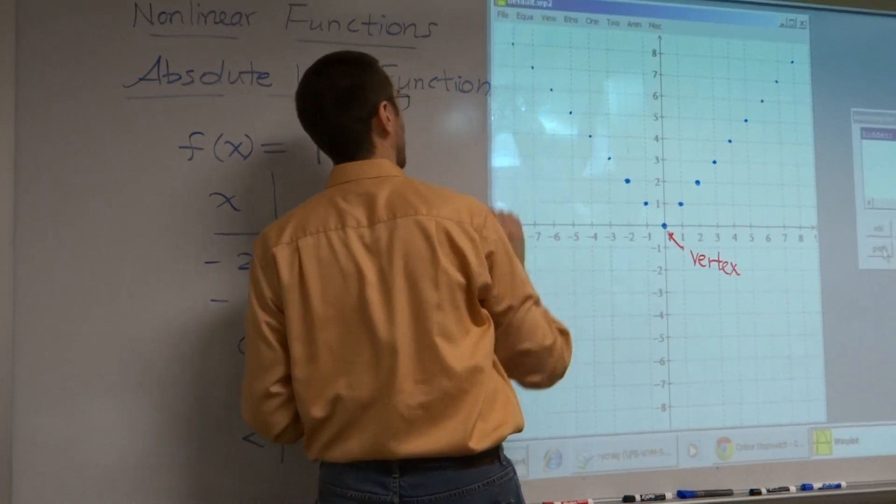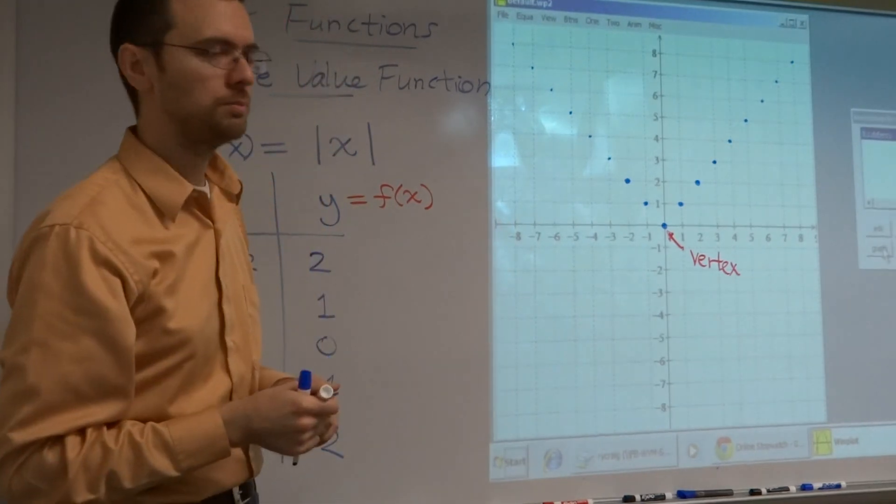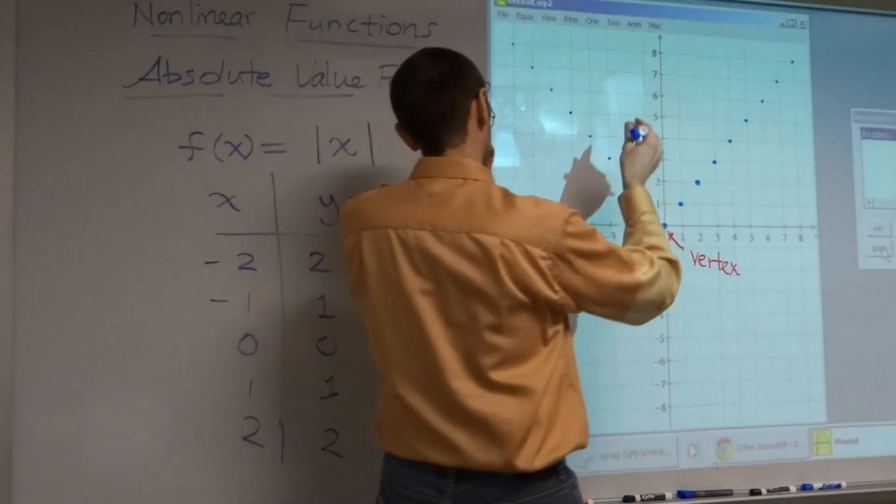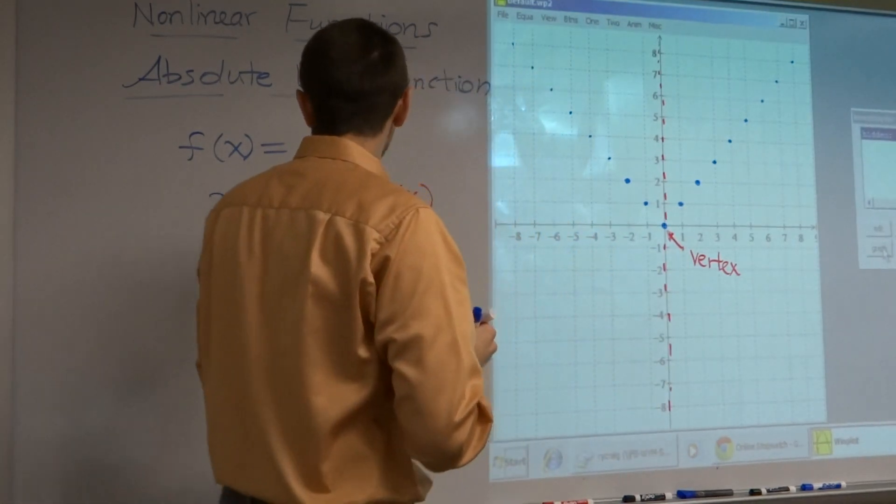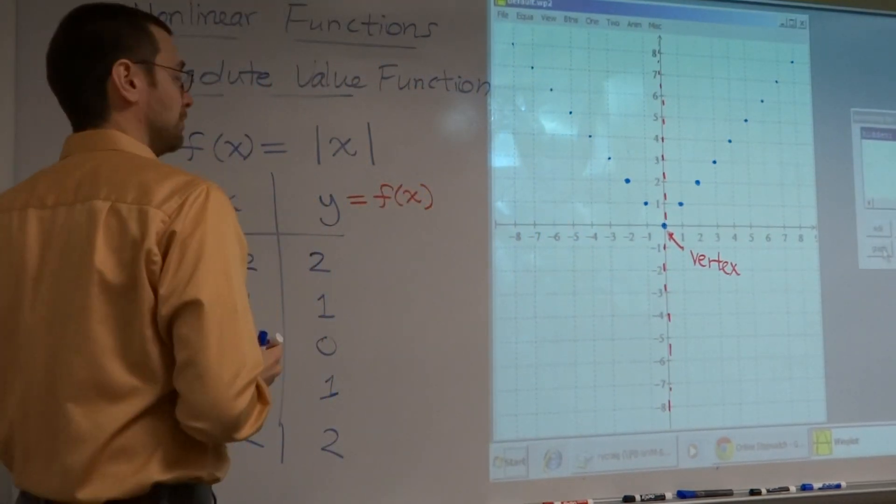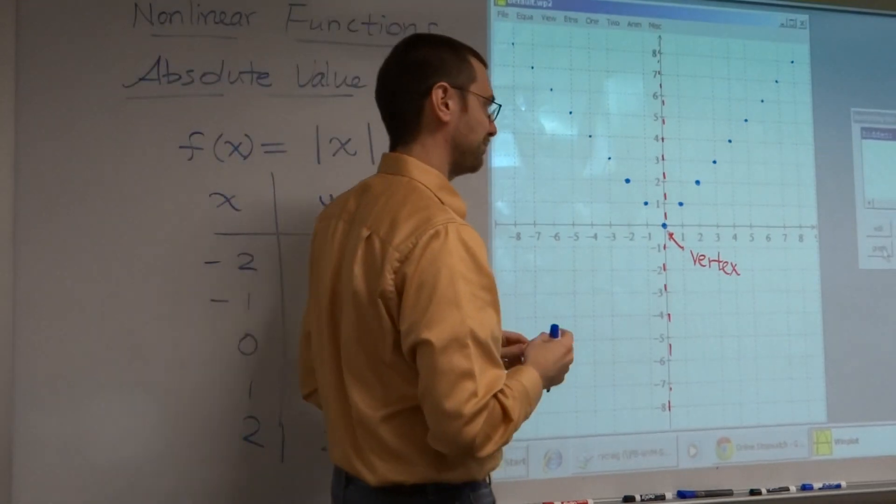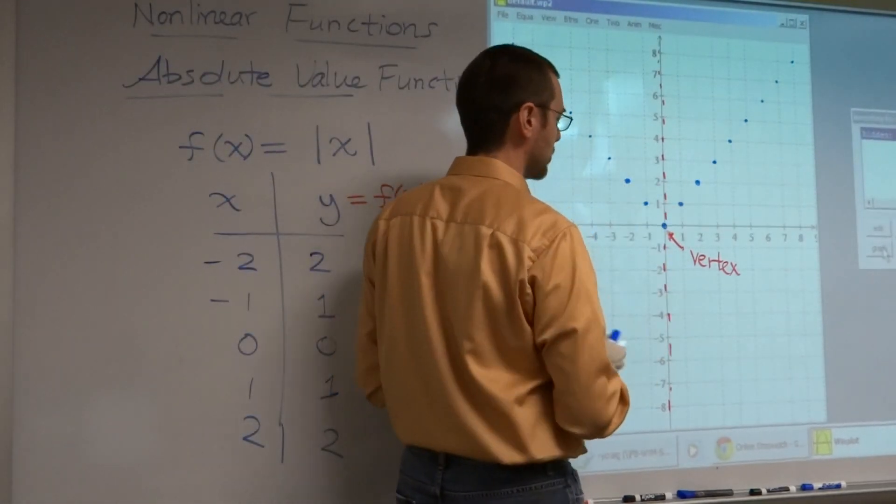Now, here's something neat about the absolute value and the parabola. There is this imaginary line going through the vertex.